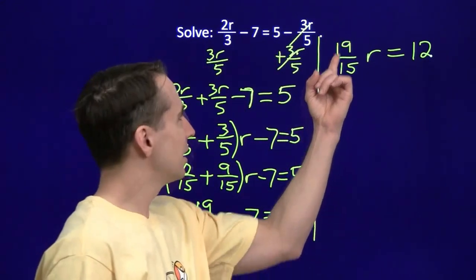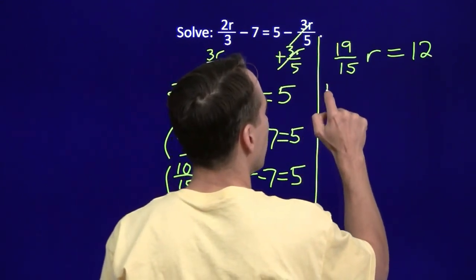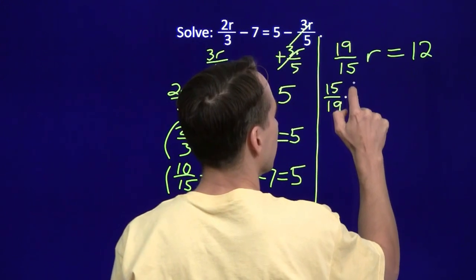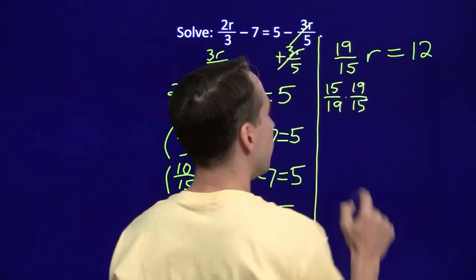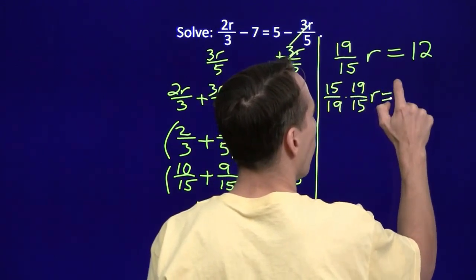So now I need to eliminate the 19 over 15. We do that by multiplying by its reciprocal. So I'm going to multiply both sides by 15 over 19. Because, of course, 15 over 19 times 19 over 15, that's going to just be 1.